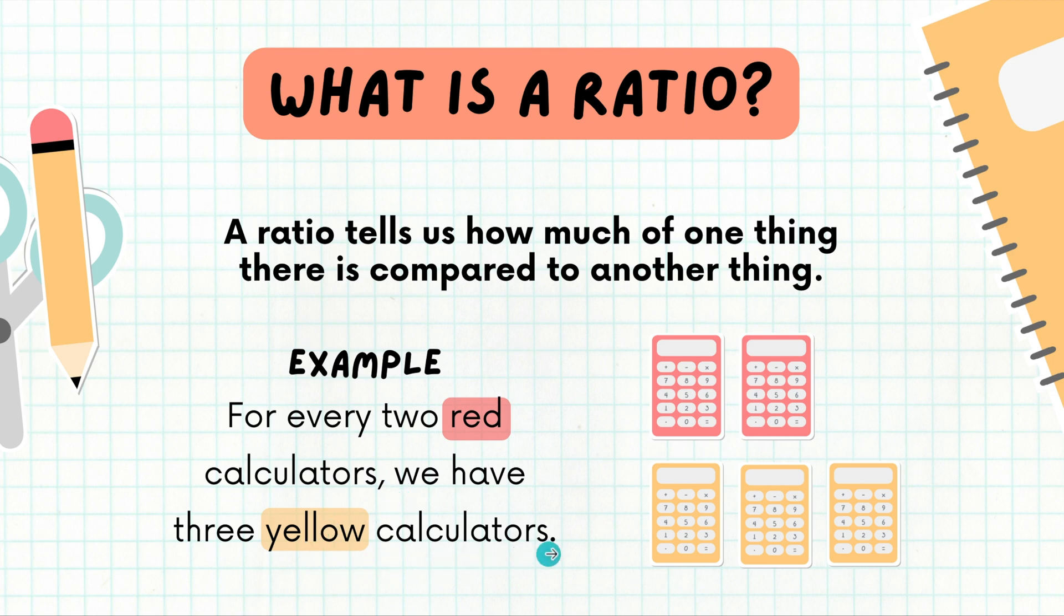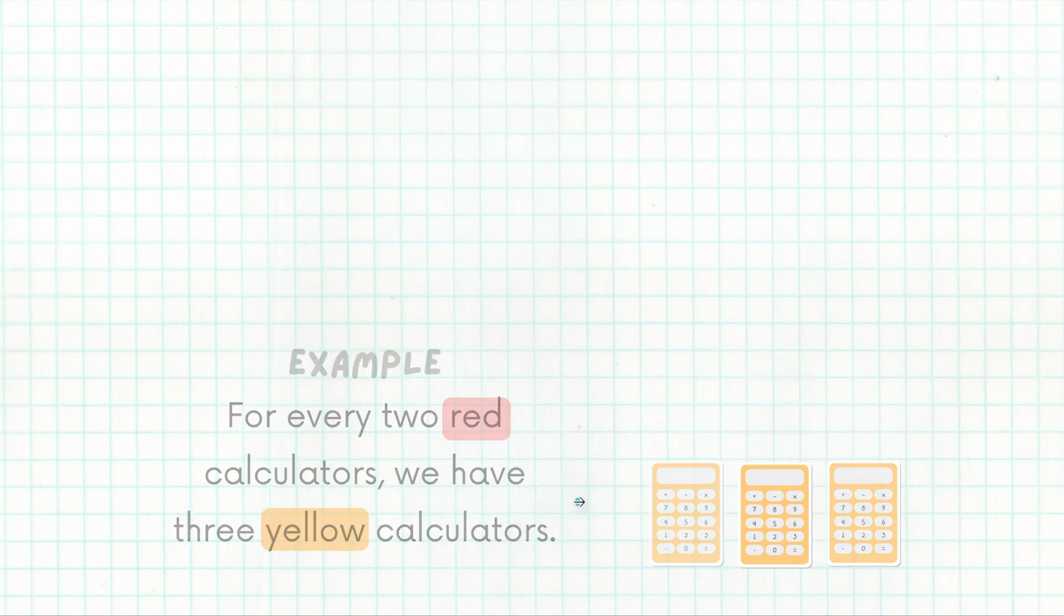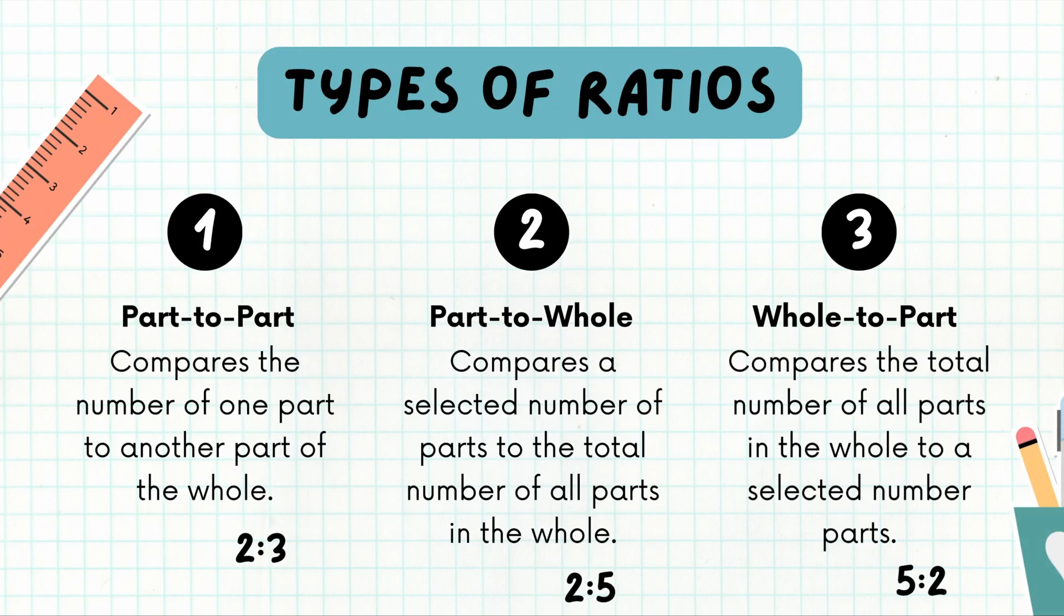Now our types of ratios can be written in three different ways. Number one, we could write part-to-part. This is what we just explored in the previous slide, two red calculators to three yellow calculators. This compares the number of one part to the number of the other part.